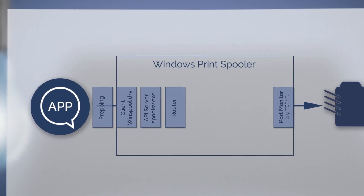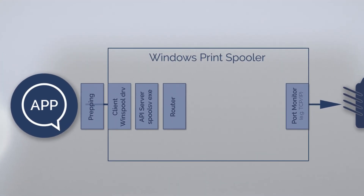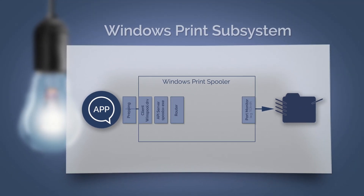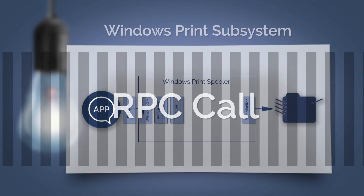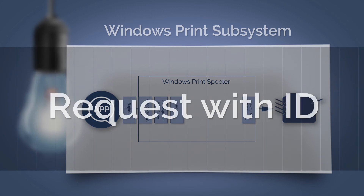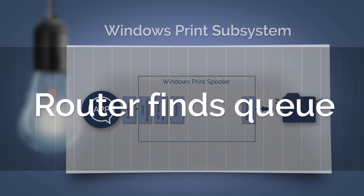The API server is the actual spooler service which sends RPC calls to the router. The router is responsible for assigning print requests to the correct printer queue on the server. There is an RPC call with a print request — this has an ID, the router finds the corresponding queue for the ID, and this queue is managed by a print provider.